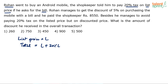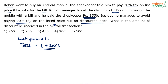Rohan managed to get a discount of 5% on purchasing the mobile with a bill, and he paid the shopkeeper ₹8,550. So, after taking the bill also, he has paid only ₹8,550. Besides, he managed to avoid paying 20% tax on the listed price but on the discounted price. So, he also ensures that he's paying 20% tax but not on the listed price — he's paid on the discounted price.